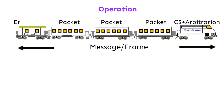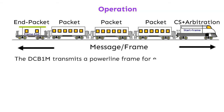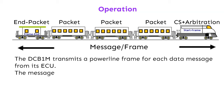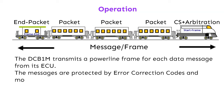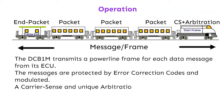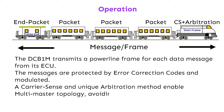The DCB1M transmits a powerline frame for each data message from its ECU. The messages are protected by error correction codes and modulated. A carrier sense and unique arbitration method enable multi-master topology, avoiding collision with other devices over the powerline.